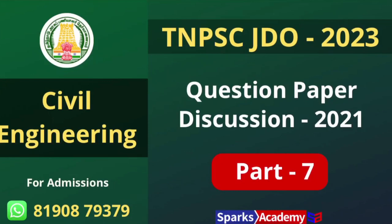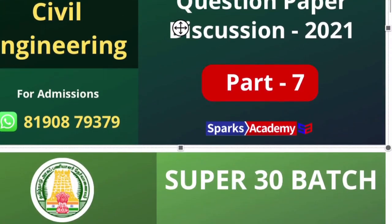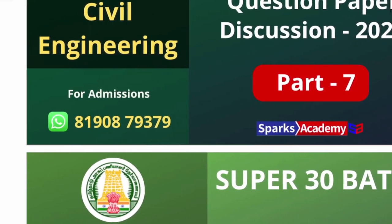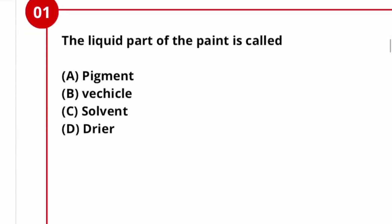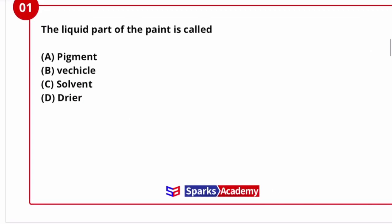Hello everyone, welcome to Sporks Academy and welcome to this question paper discussion video. This is Part 7 of JDUO 2021 question paper discussion. The analysis video will be very helpful for you. Let's move on to the first question. The liquid part of a paint is called?